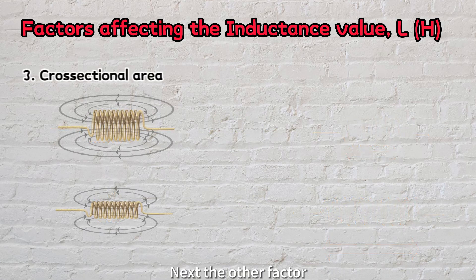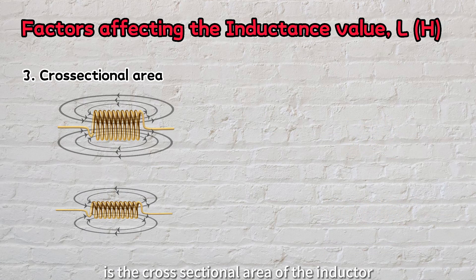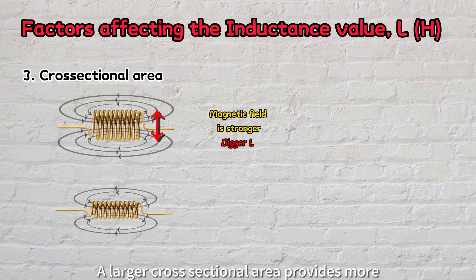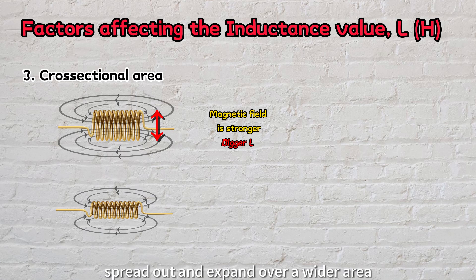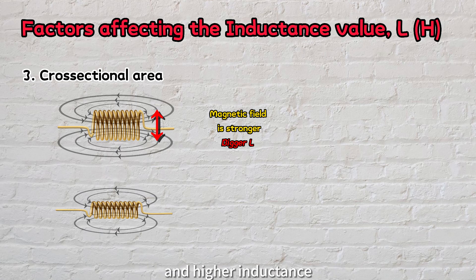Next, the other factor is the cross-sectional area of the inductor. A larger cross-sectional area provides more space for the magnetic field to spread out and expand over a wider area, resulting in stronger magnetic field and higher inductance.